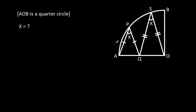In this video, we have been given that AP is equal to PQ, QS is equal to SO, and angle APQ is X, angle QSO is X. Then we have to find X.